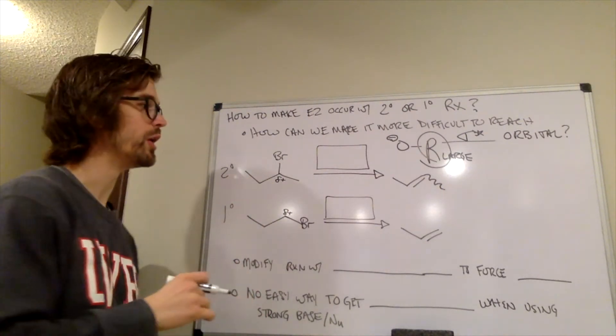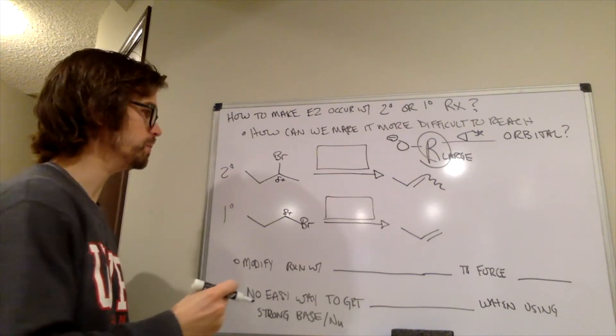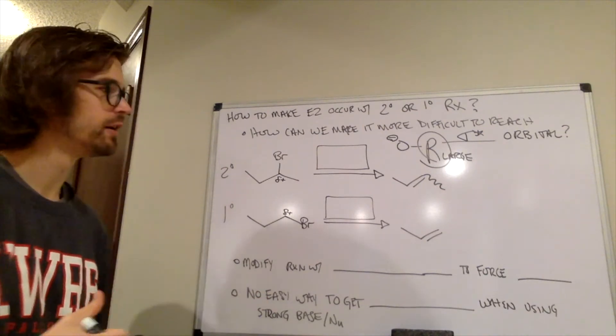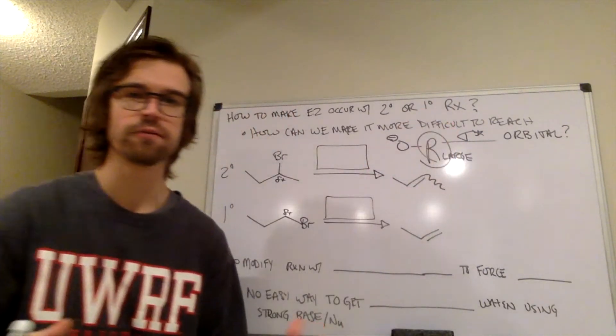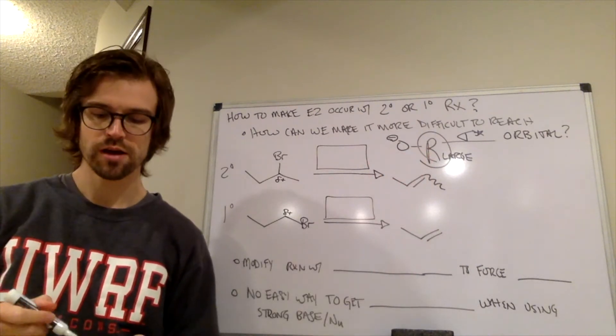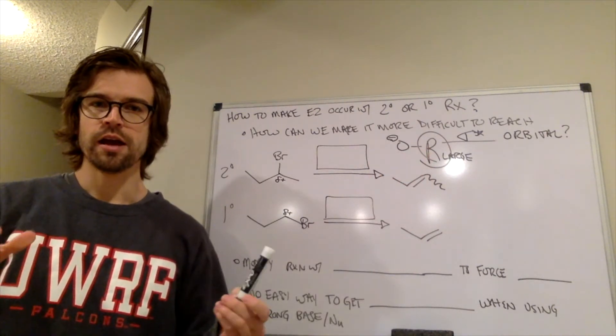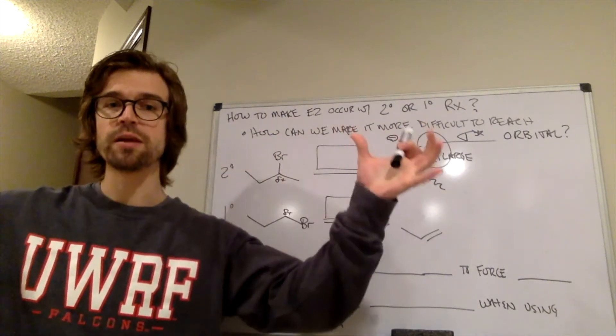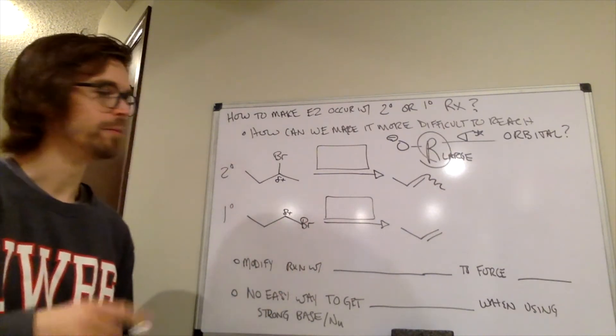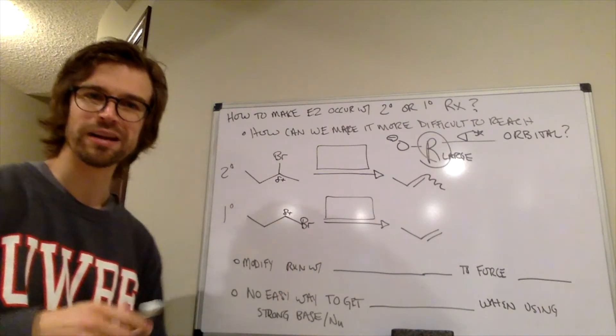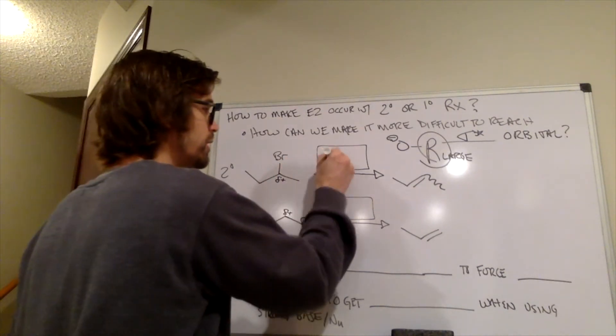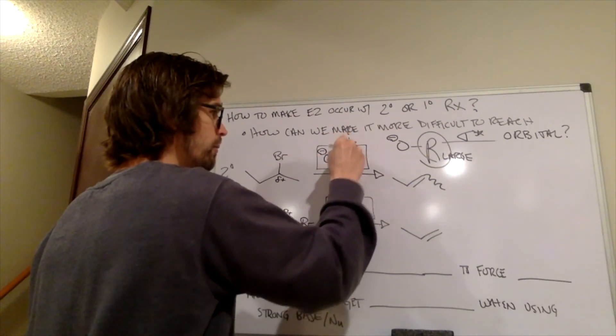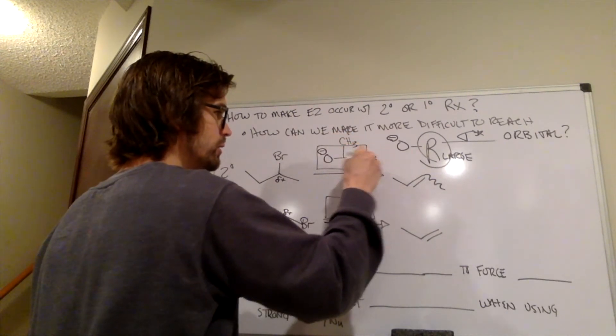And that's what we do if we want to force E2 when we have a pretty wide-open alkyl halide. So what's the biggest group that you can think of? What's the widest group that you can think of? And when you think about that, think back to when we were naming different branched substituents, because we want it to be really branched. We want it to be really wide. So you paused, you thought about that for a little bit, because we want the biggest, widest group possible.